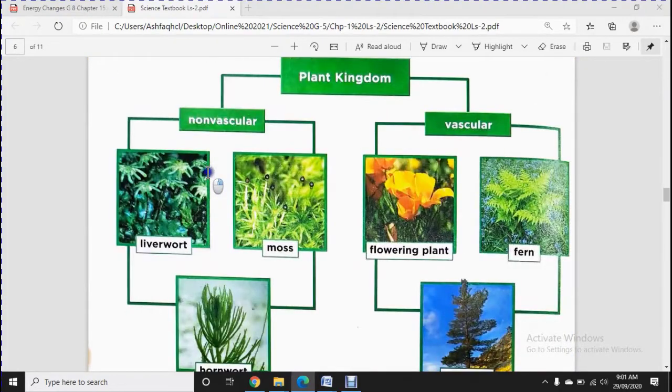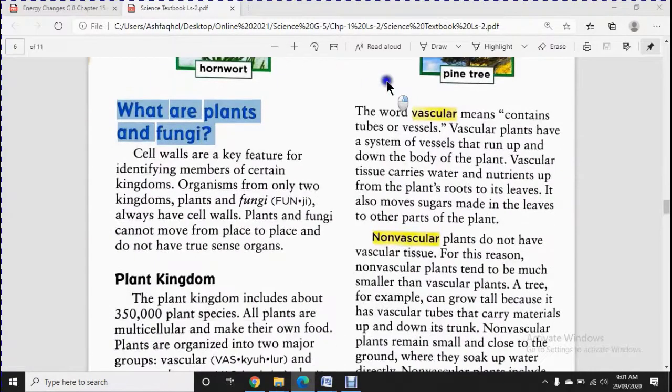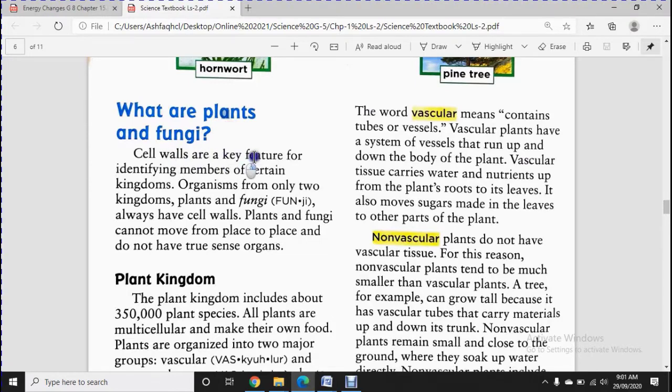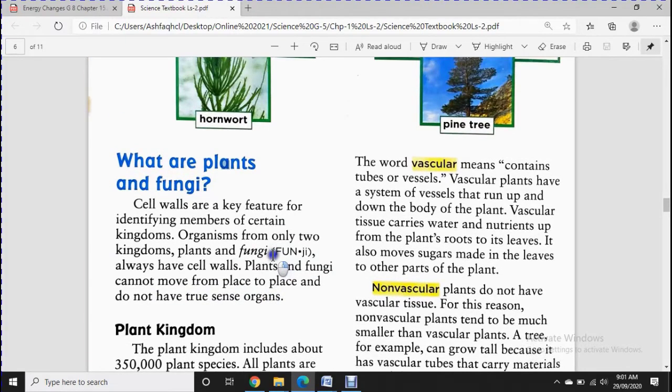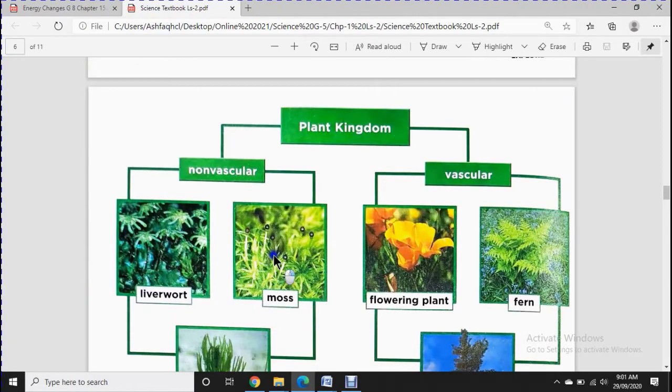Plant kingdom. What are plants? Cell walls are a key feature for identifying members of certain kingdoms. Organisms from only two kingdoms, plants and fungi, always have cell walls. Plants and fungi cannot move from place to place and do not have sense organs. So this means first of all we can identify or we can differentiate organisms.